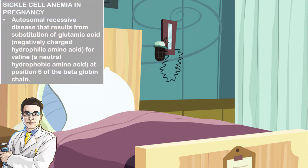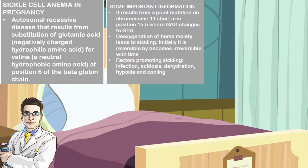Sickle cell anemia is an autosomal recessive disease that results from substitution of glutamic acid, a negatively charged hydrophilic amino acid, for valine, a neutral hydrophobic amino acid, at the sixth position of the beta chain of hemoglobin. This results from a point mutation on chromosome 11, the short arm at position 15.5, where the codon GAG changes to GTG.